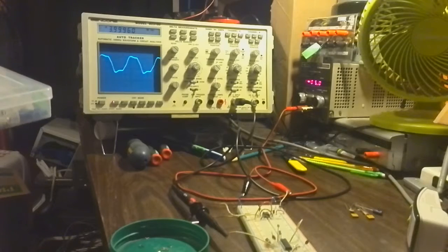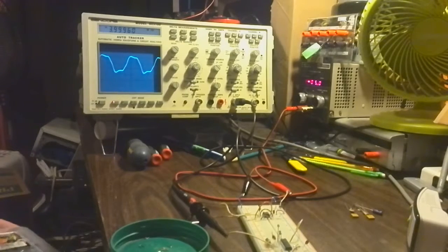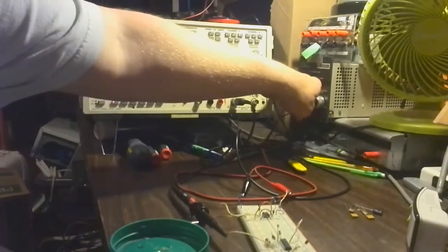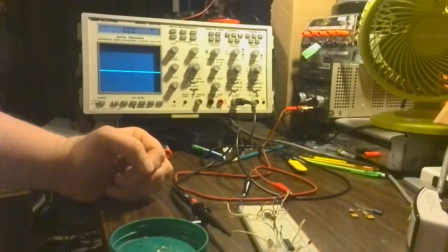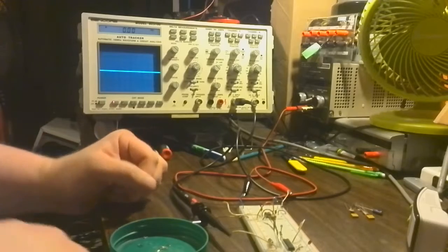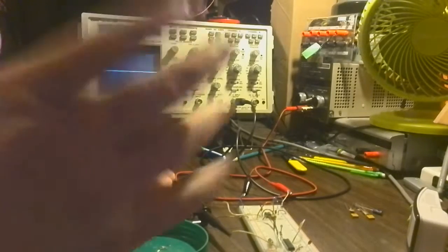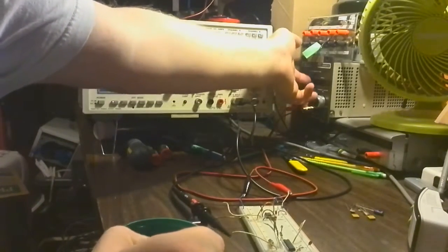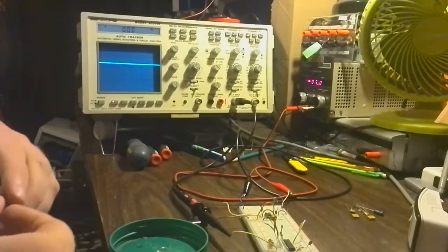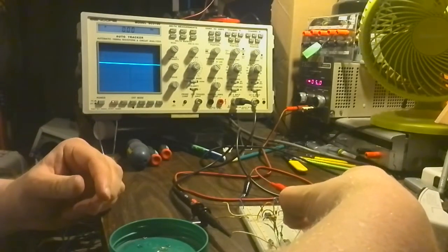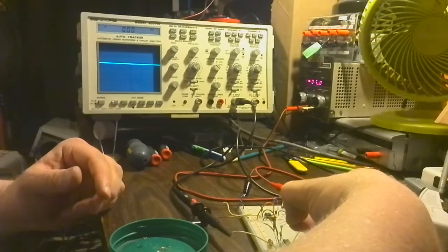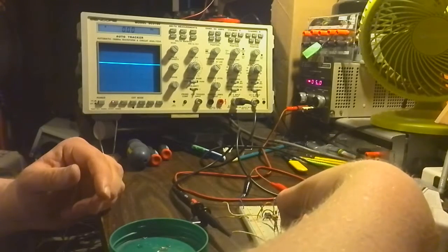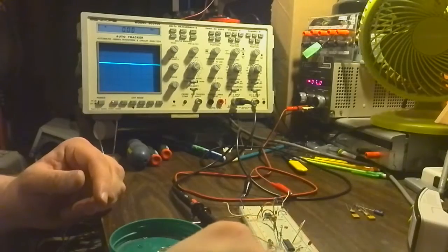Okay, I'm trying to see whatever caps I got. I got some 82 picofarad. Maybe I can put some of them in parallel. So I'll come back and I'll try that. Okay, I got five 82 picofarad caps in parallel, so it should be like 400 and something picofarads. Let's just give it a try. No, doesn't seem to oscillate. Maybe add an extra one to it. Nah, doesn't like it.